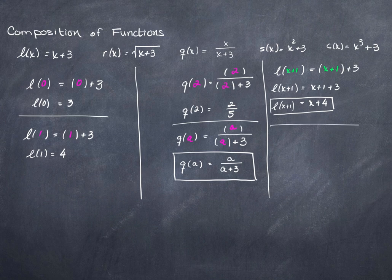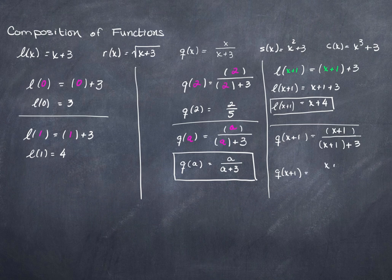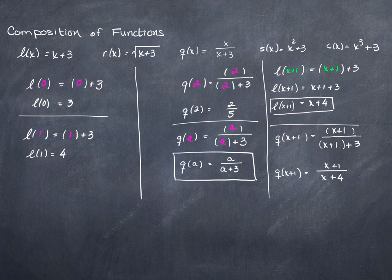Let's do another example. Let's do Q of x plus 1. That's going to be x plus 1 over x plus 1 plus 3. Most of the time you won't bother with different colors, and I want you to start to get used to that. So Q of x plus 1 — the function Q with x plus 1 plugged into it — is x plus 1 over x plus 4.